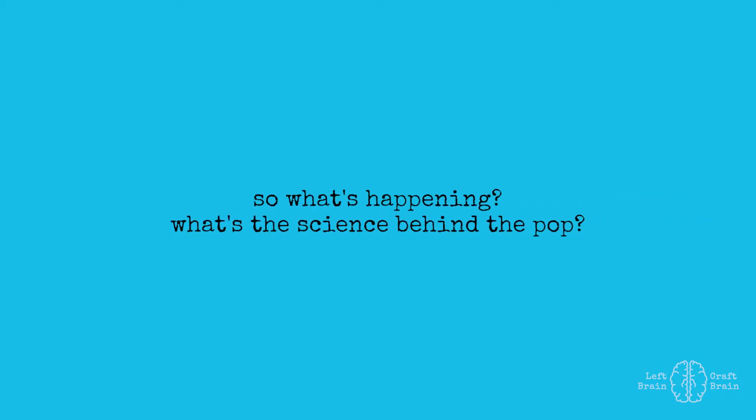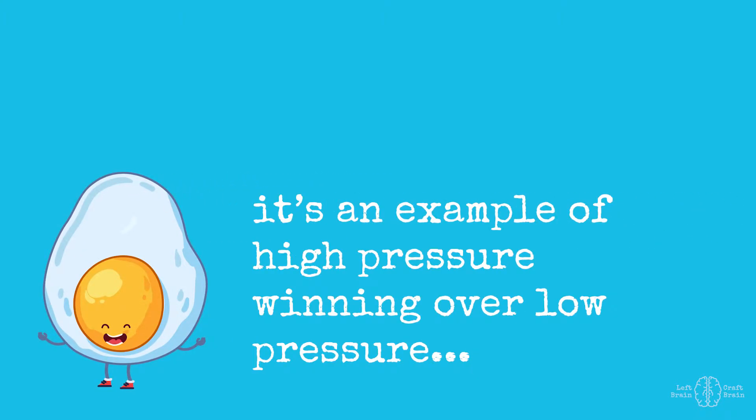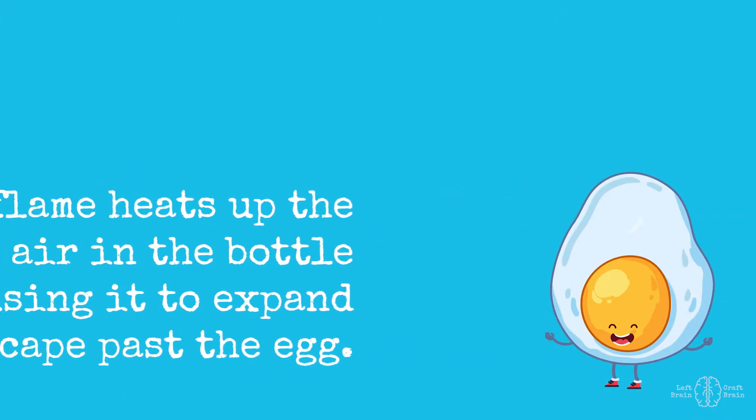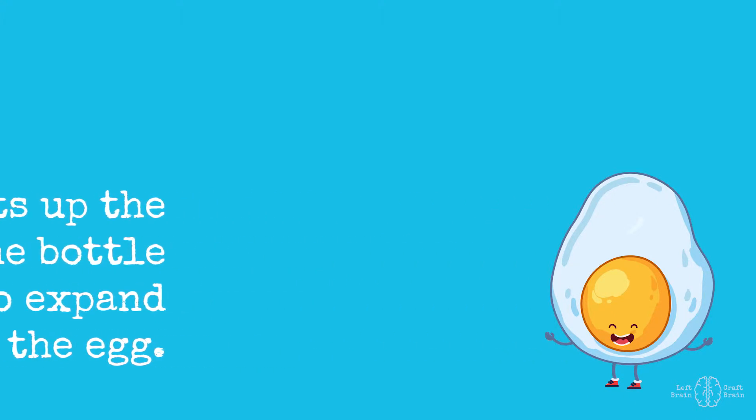So what happened inside this bottle that caused the egg to go down into the bottle? It's all about pressure. So when you drop that burning piece of paper inside the bottle, the temperature heated up and then it caused the air inside the bottle to expand and escape around the small cracks on the edges of that egg.